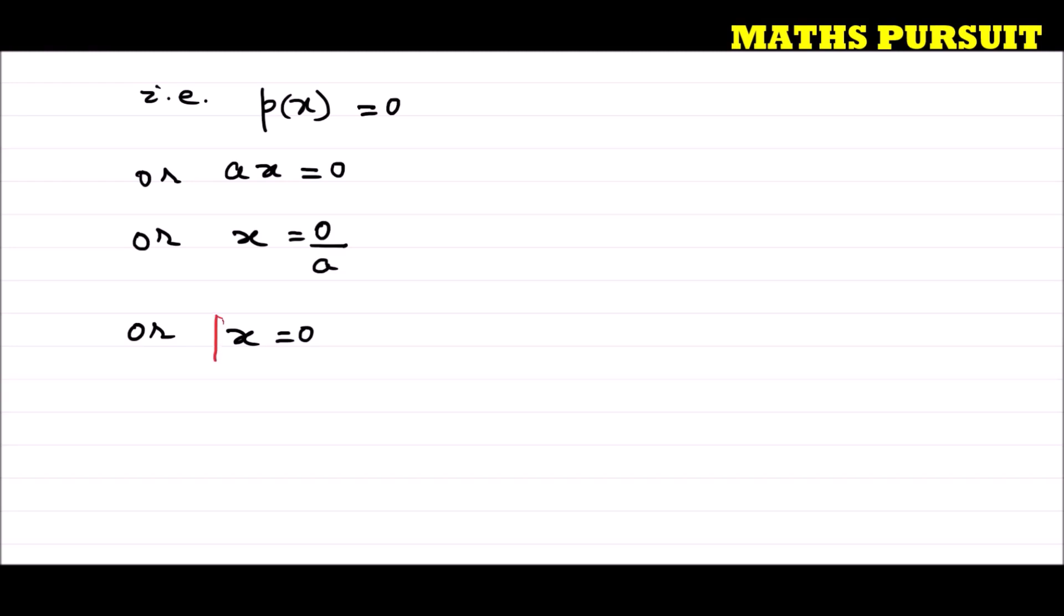Our answer here is zero. So we can write our concluding answer saying that the zero of the given polynomial is zero.